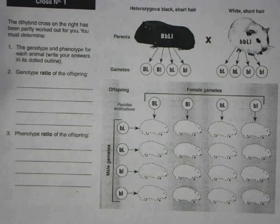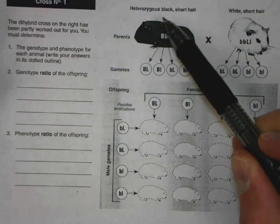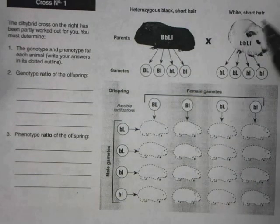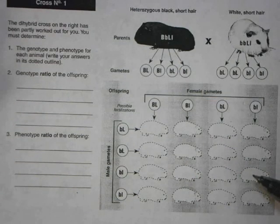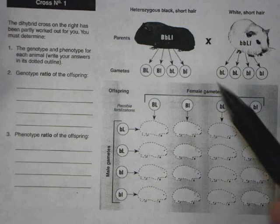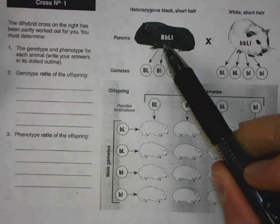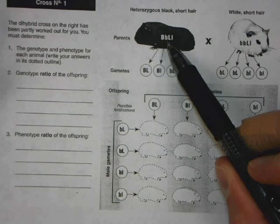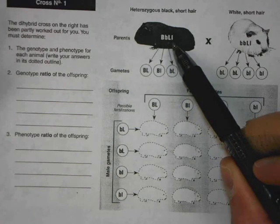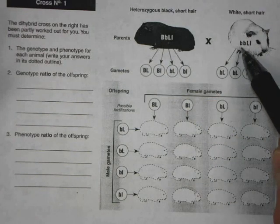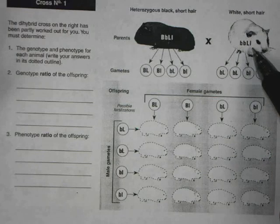The first cross we're going to do is crossing a heterozygous black short-haired guinea pig with a white short-haired guinea pig. The genotype for the heterozygous black short-haired is capital B, little b, capital L, little l. And for the white short-haired it's little b, little b, capital L, little l.